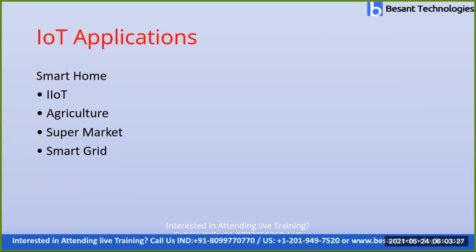There are a lot of IoT applications — for example, smart home, agriculture, supermarket, smart grid, IIoT (Industrial Internet of Things), and WoT (Web of Things), which is mostly web-application-based control. In smart home applications, we can control home appliances entirely using a phone and make communication between your mobile and your car.